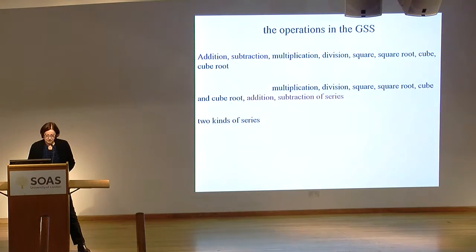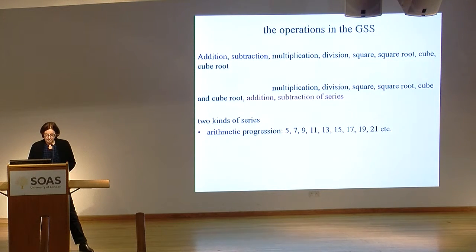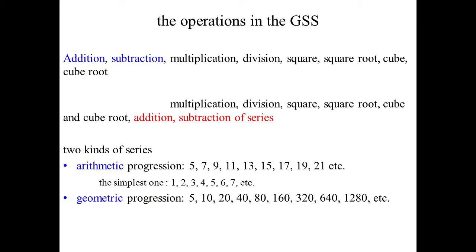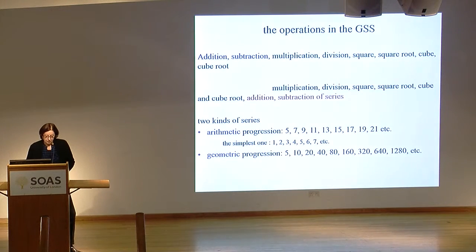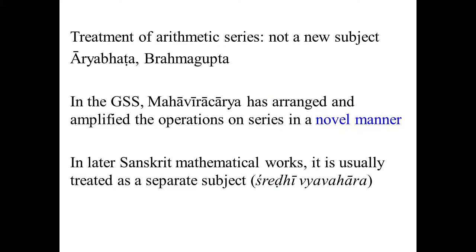So what do we mean by series? Here in the Ganita Sar Sangraha we have two kinds of series, which are sequences of numbers following a certain law. There is arithmetic progression, where you add a constant — for example, two — and geometric progression, where you multiply constantly by the same number to get to the next term.